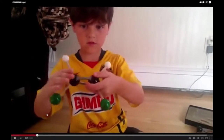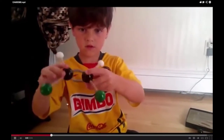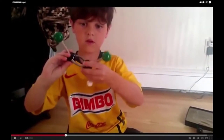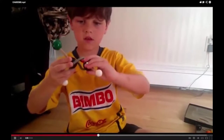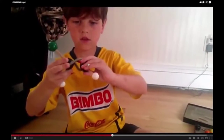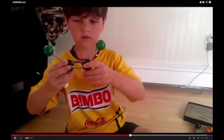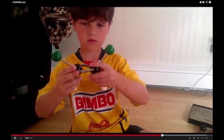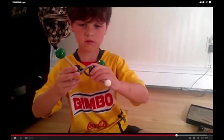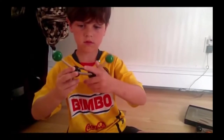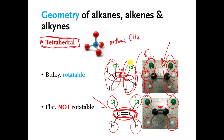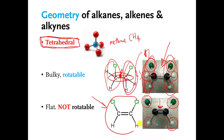Here's my son showing you the molecule with the carbon-carbon double bond and showing you that you can twist, but the atoms snap back into place — they don't rotate. Twist and snap back. The fact that you can't rotate anymore when you have a carbon-carbon double bond gives us a new kind of isomer.